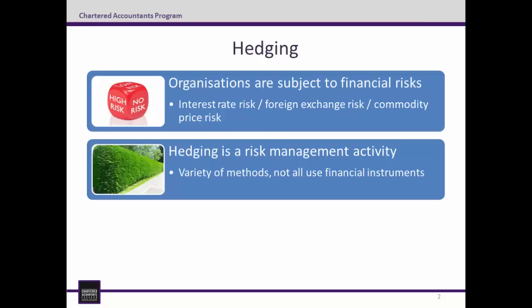An example of this would be an Australian-based retailer who has ordered 5 million euro of inventory from an overseas supplier. Note that the price of the purchase is denominated in a foreign currency — in this case, euros. The concern for the entity is that between placing the order and paying for the inventory, the Aussie dollar weakens against the euro, and the inventory ends up costing more.